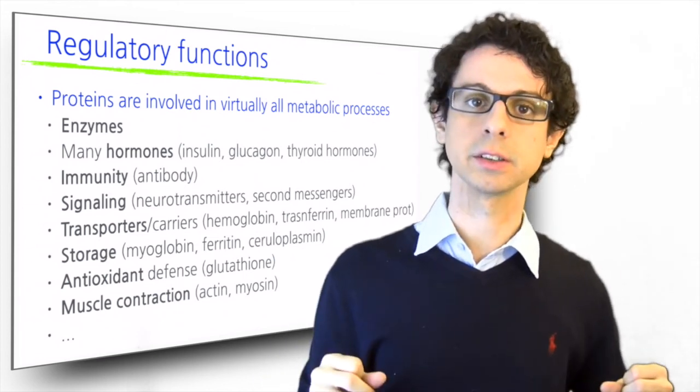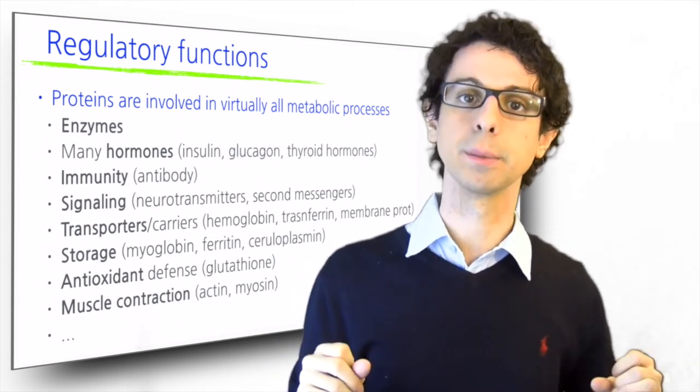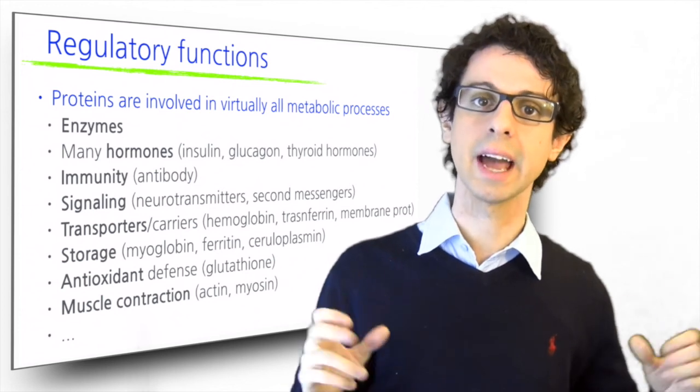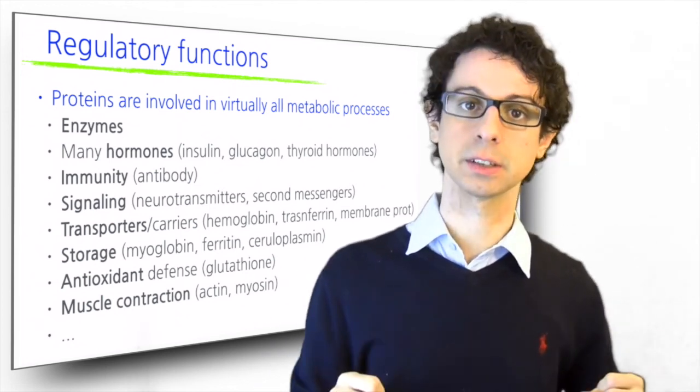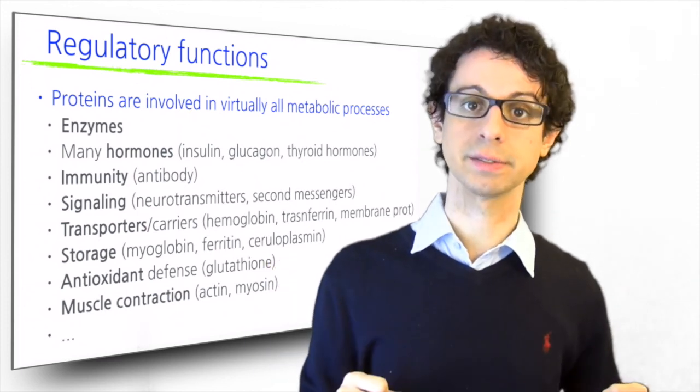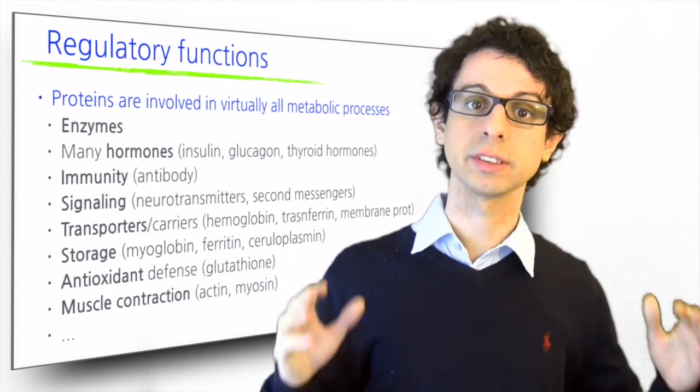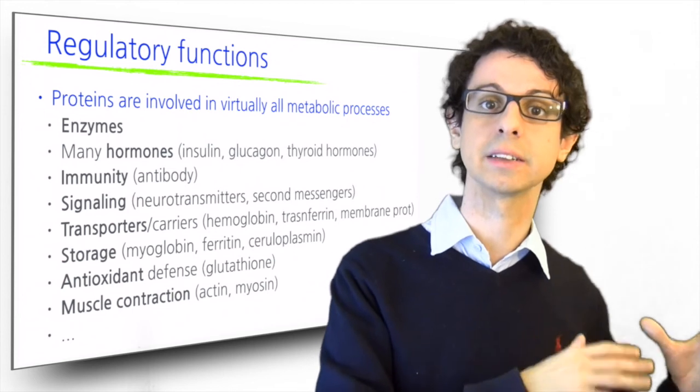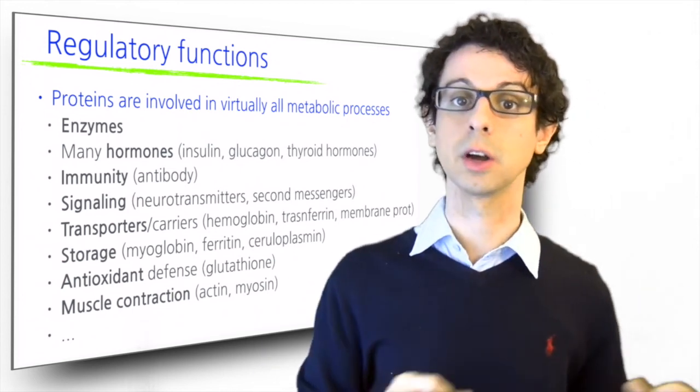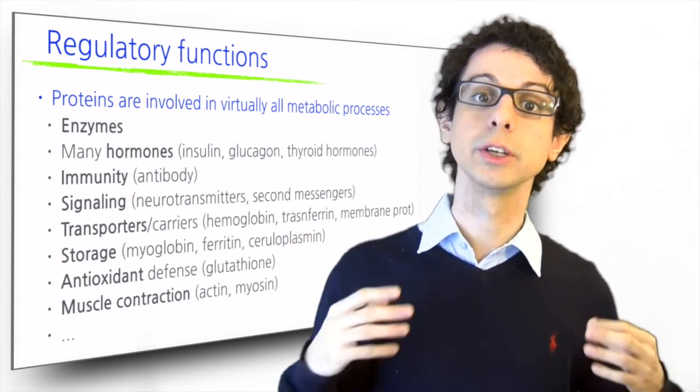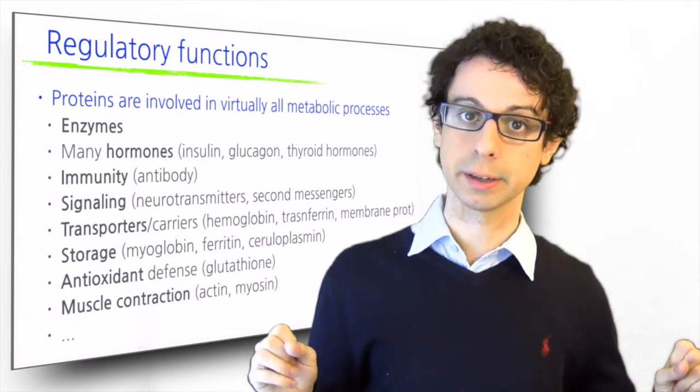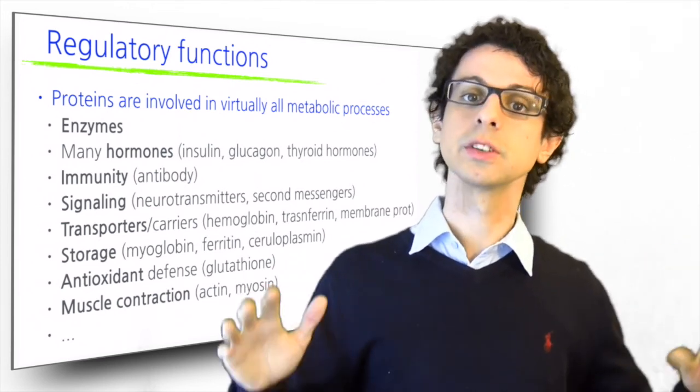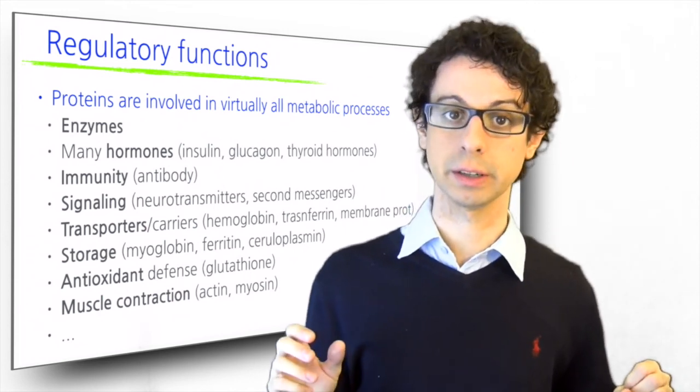The antibodies of our immune system are proteins. Signaling molecules, transporters and carriers, receptors, storage molecules, antioxidant molecules, blood clotting factors, second messengers that carry messages inside the cells from the membranes to the nucleus or other organelles, or from the nucleus to the DNA. All these molecules are often proteins. Let's now focus on a couple of important regulatory functions of proteins.